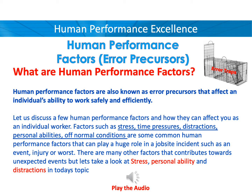Factors such as stress, time pressure, distractions, personal abilities, and off-normal conditions are some common human performance factors that can play a huge role in a jobsite incident, such as an event, injury, or worse. There are many other factors that contribute towards unexpected events, but let's take a look at stress, personal ability, and distractions in today's topic.